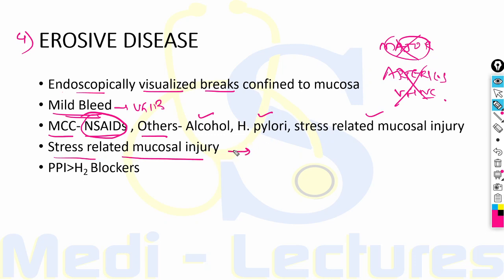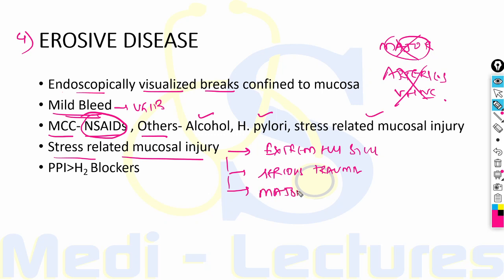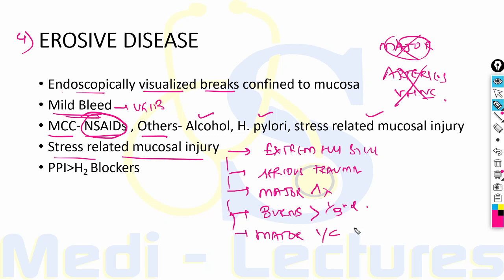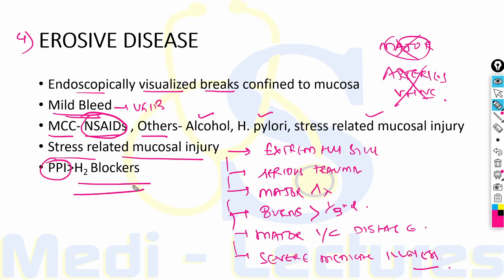Stress-related mucosal injury occurs only in extremely sick patients undergoing serious physiological trauma — for example, major surgery, burns covering more than one third of the body surface, any major intracranial disease, or severe medical illness. For treatment, proton pump inhibitors are far better than H2 blockers.